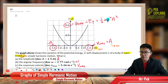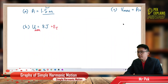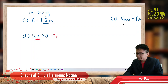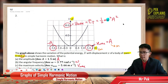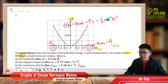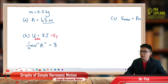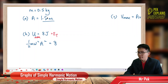The formula for total energy is half m omega squared times amplitude squared. So: half m omega squared A squared = 8 Joules. We have amplitude = 1.5 meters and mass = 0.5 kilogram, all in SI units, so we can find omega easily.